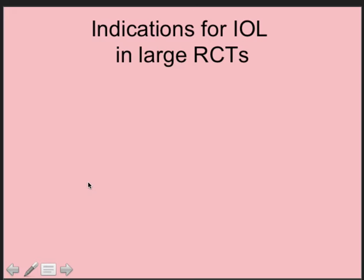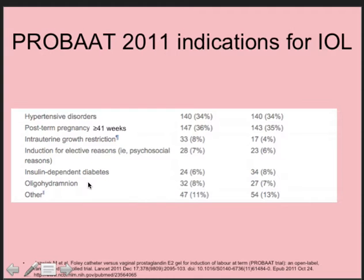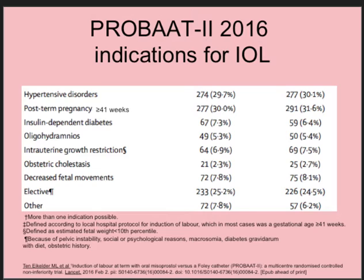Looking at the PROBAT study from 2011 and the PROBAT 2 study from 2016, we can see what indications were actually used for induction of labour in practice. Almost one-third of the population was induced because of hypertensive disorders — hypertension in pregnancy and/or preeclampsia. Post-term pregnancy was another major group, defined in the Netherlands as 41 weeks or more. Other groups included intrauterine growth restriction, elective/psychosocial reasons, insulin-dependent diabetes, and oligohydramnios — though the latter is not supported by solid research. Both studies showed the same pattern, with hypertensive disorders accounting for roughly one-third.